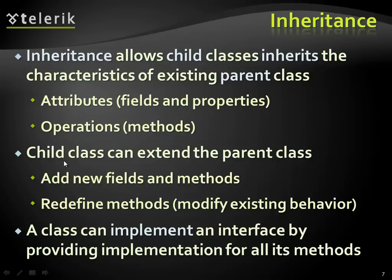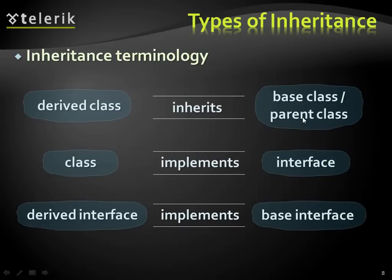A child class can extend the parent class. Everything that the child is allowed to use is automatically inherited to it, and the child can also extend the parent and add its own methods. That's the power of inheritance — like having an animal class and then a dog that will have all the relevant properties of animal, but it can have its own customization and additional properties.